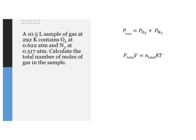A 10.5 liter sample of gas at 292 kelvin contains oxygen at 0.622 atm and N2 at 0.517 atm. Calculate the total number of moles of gas in the sample.